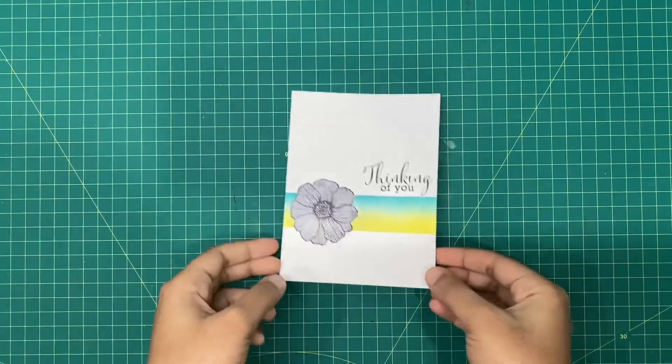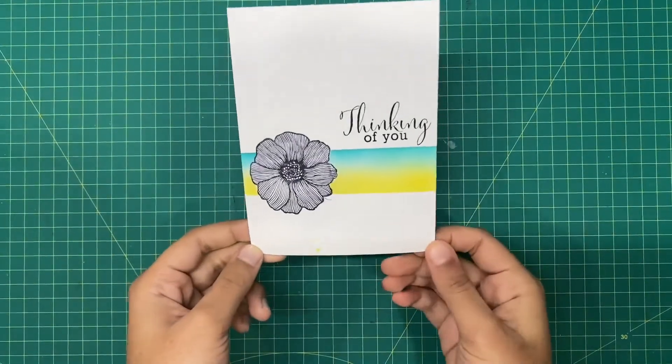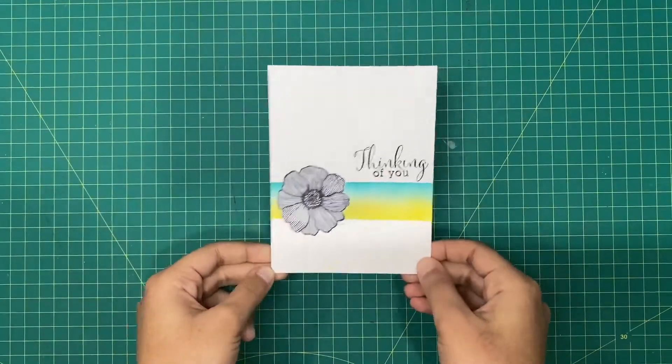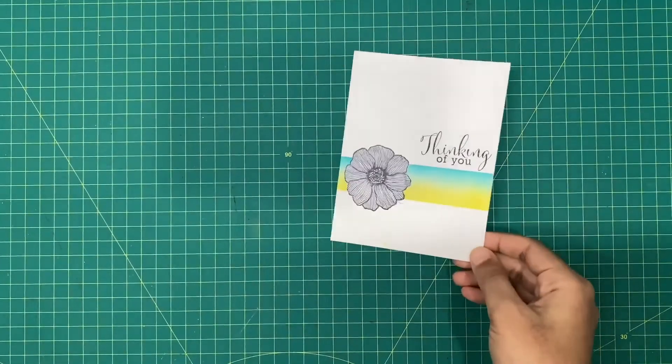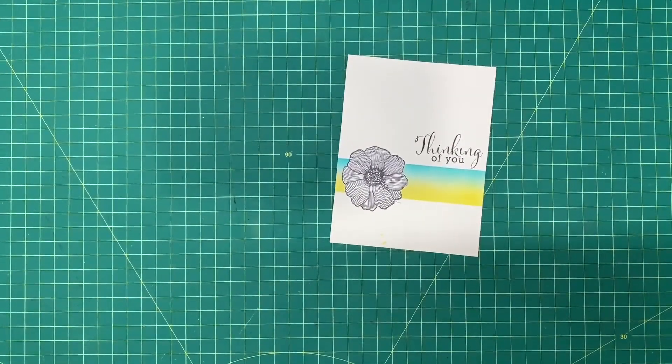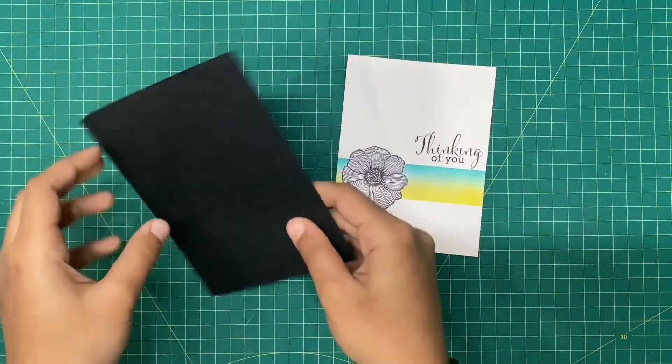Done decorating our mat cardstock using the dye ink method everybody. Now all we have left to do is stick this mat on top of our base cardstock.